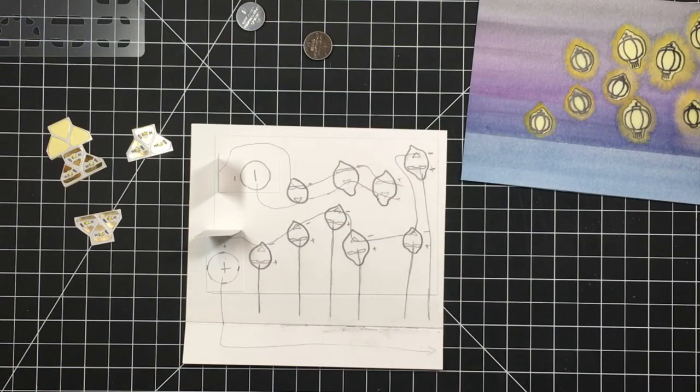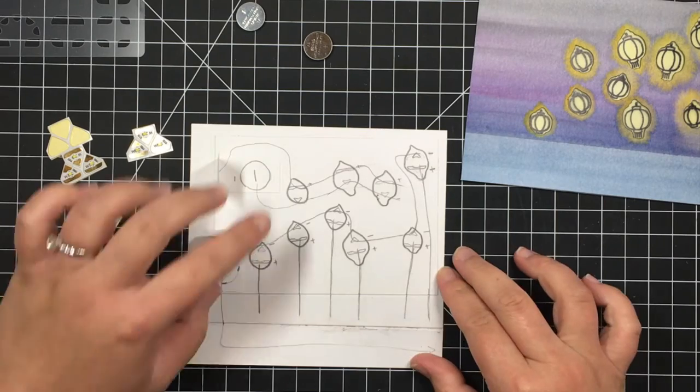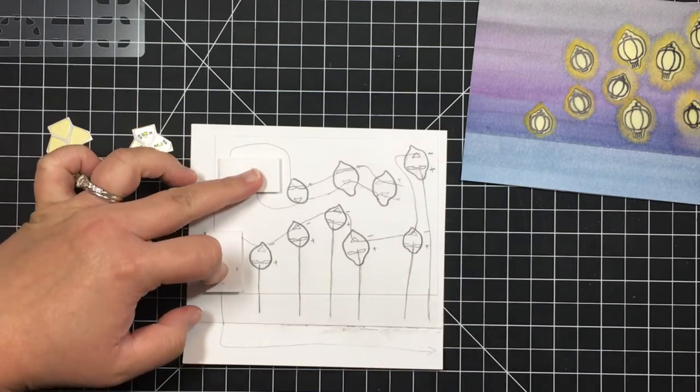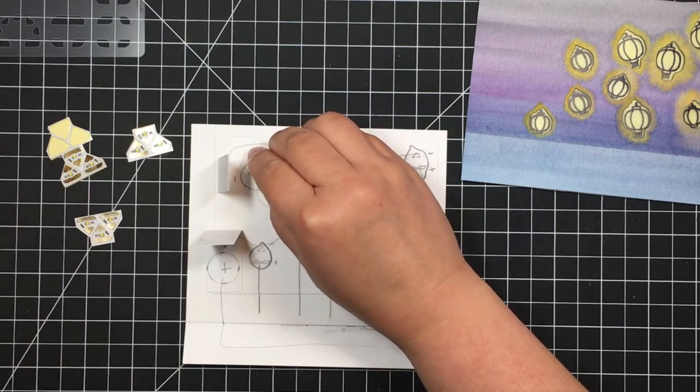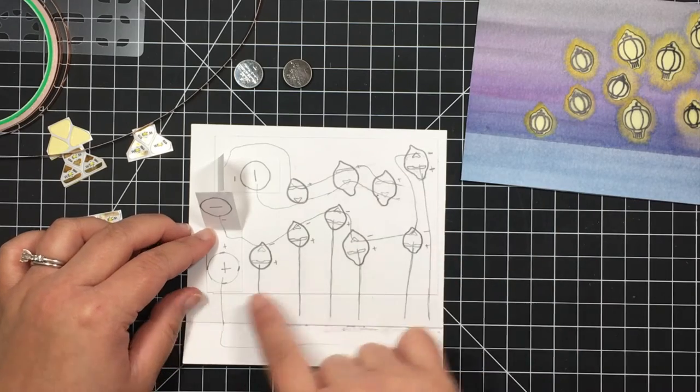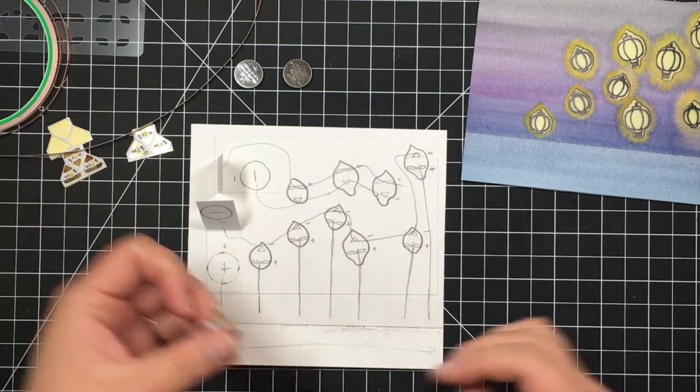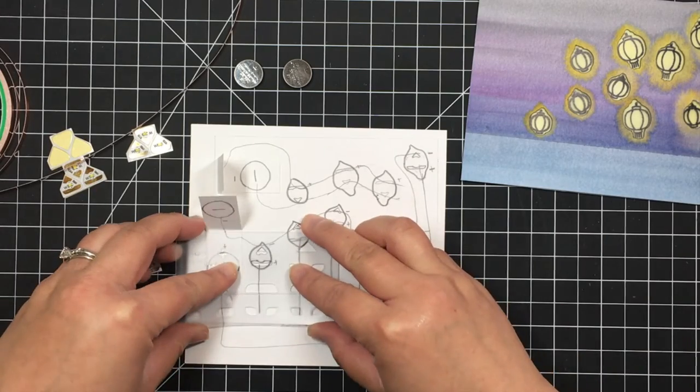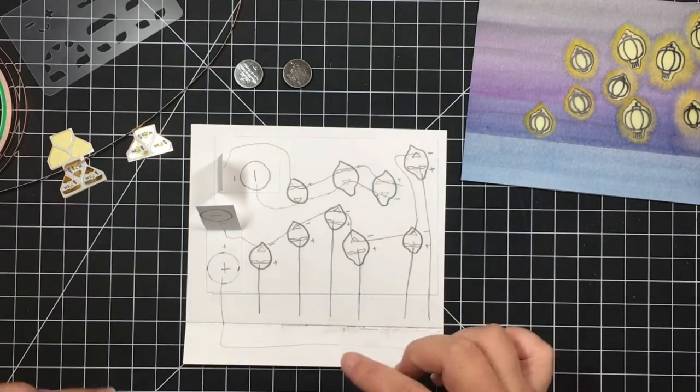And it's circuit time! Using the outlines of the lanterns I drew earlier I sketch my circuits. On the top I create a simple circuit where the battery when engaged will light the three lanterns. The copper foil tape will connect to the positive and negative sides of the battery and the positive and negative sides of each LED sticker. I use the plastic template to mark exactly where I want my Chibitronic stickers.